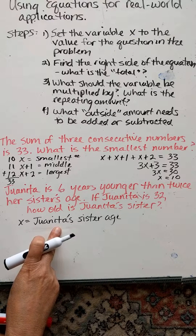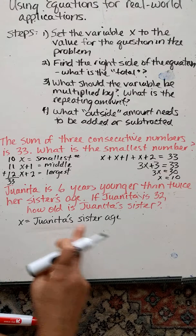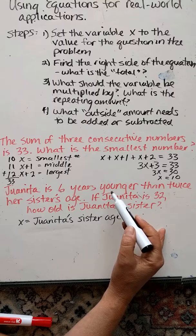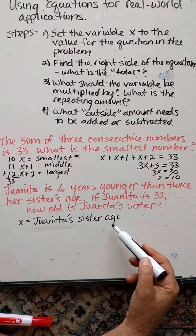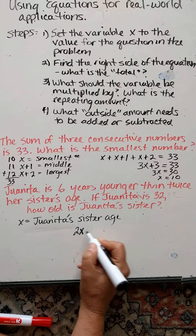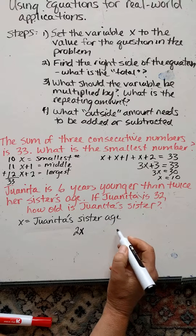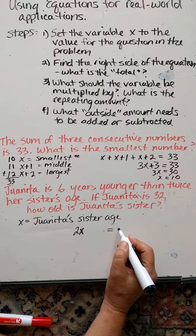So the first thing here is we're going to say x equals Juanita's sister's age. And we also see here that we see twice her sister's age. So here's her sister's age, and we say twice. So that to me looks like a 2x. The total here is going to be 32, and this is going to be Juanita's age. 32.